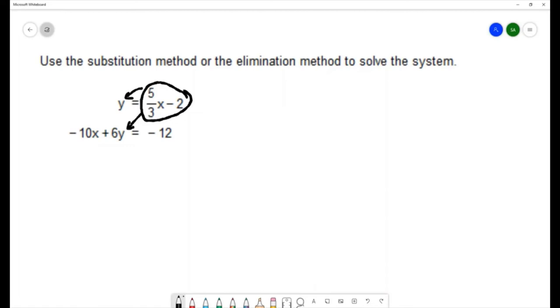And that gives me negative 10x plus 6 times 5 thirds x minus 2 equals negative 12. Now I have an equation that only has one variable and I'll use the distributive property.